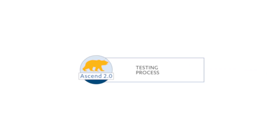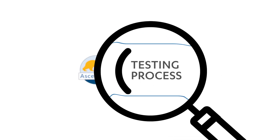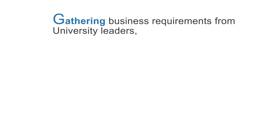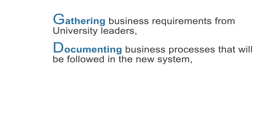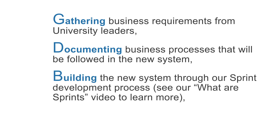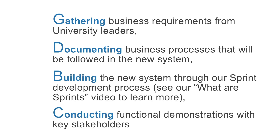Let's look at the process the program will follow to conduct SIT. Before SIT began, there was a considerable amount of pre-work completed to ensure testing is accurate and thorough. These activities included gathering business requirements from university leaders, documenting business processes that will be followed in the new system, building the new system through the sprint development process, and conducting functional demonstrations with key stakeholders.